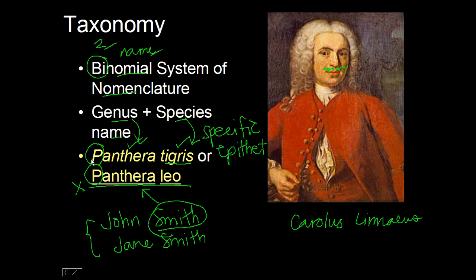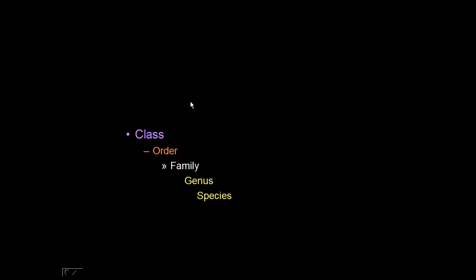We've been looking at just genus and species, but there's a broader scope. For example, Panthera leo (lion) belongs to the genus Panthera — the big cat group. The family is Felidae (cats), the order is Carnivora, the class is Mammalia, the phylum is Chordata, and the kingdom is Animalia. So what we looked at is actually part of a much larger grouping.